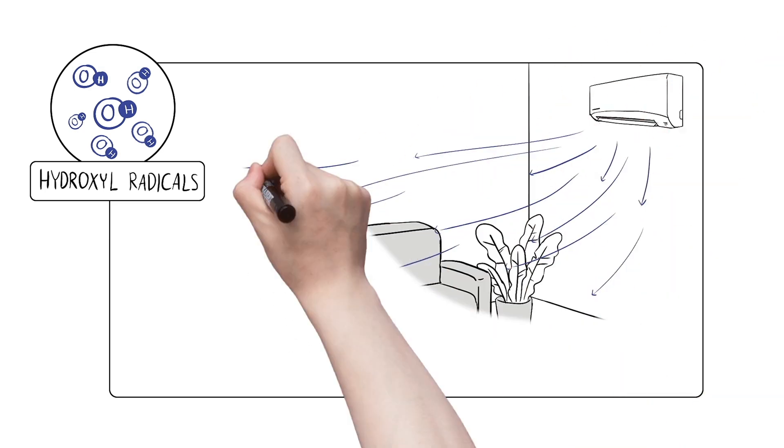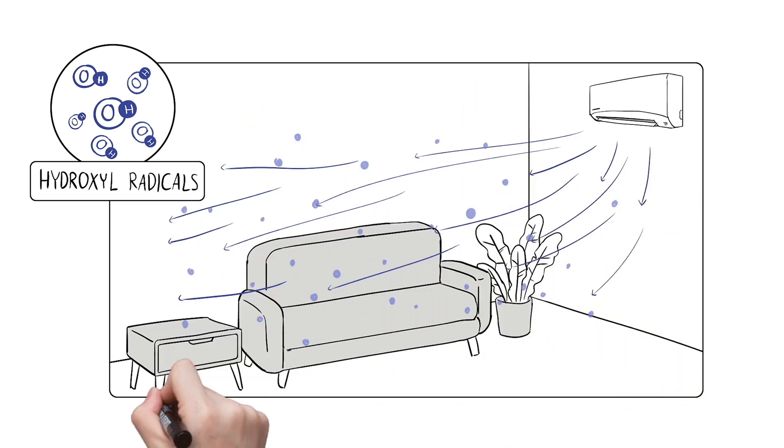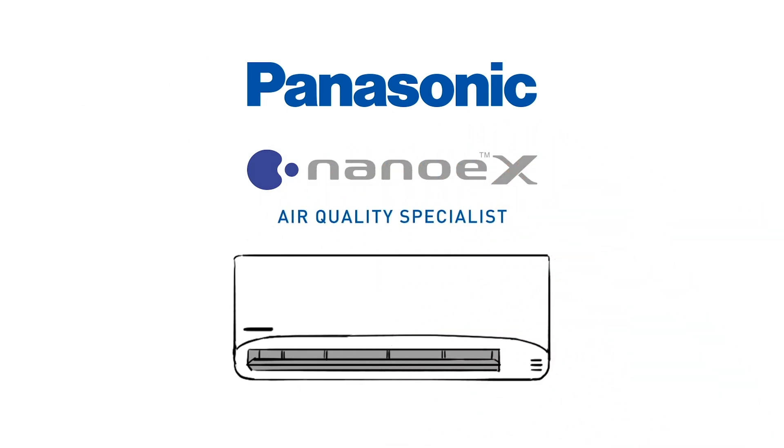Unlike other technologies, Panasonic Nano-X actively spreads ions through the air and onto surfaces. Let us demonstrate how Nano-X improves the air quality in your room.